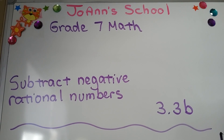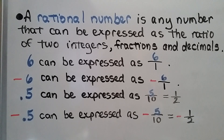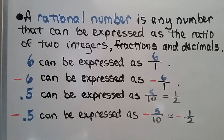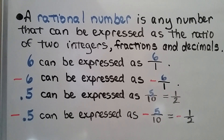Subtract negative rational numbers — less than 3.3b. A rational number is any number that can be expressed as the ratio of two integers. So that would be fractions. And it would also be decimals because we can write decimals as a fraction. So 6 can be expressed as 6 over 1 as a fraction, and negative 6 can be expressed as negative 6 over 1.